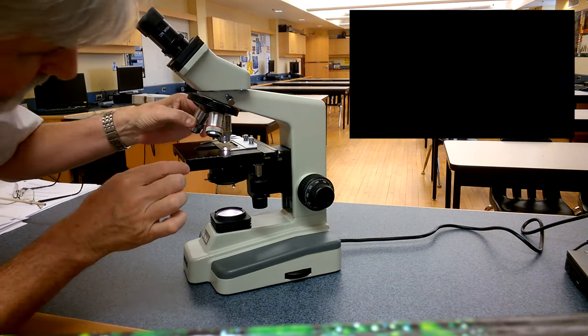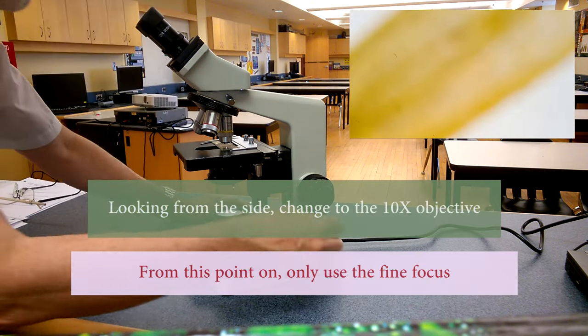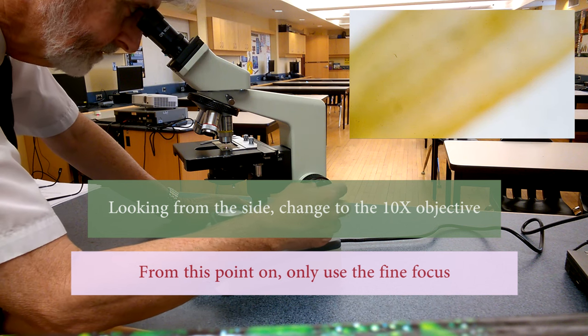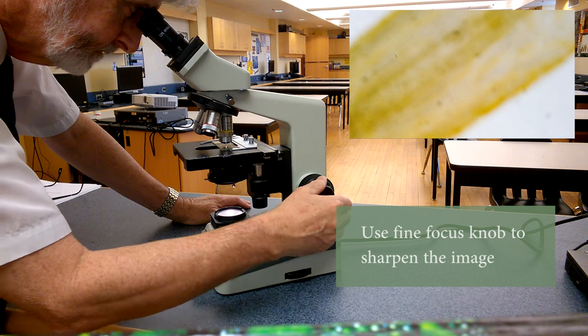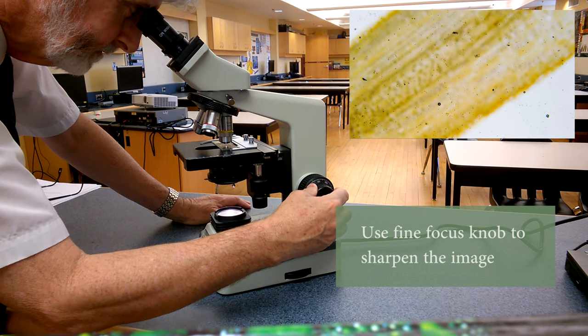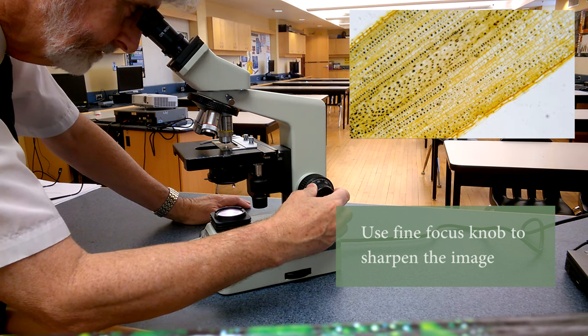Now you can change to higher magnification. Looking from the side, switch to the ten times lens, and from this point on you should only be using the fine focus. Some adjustment of the fine focus should bring your specimen back into a sharp image.